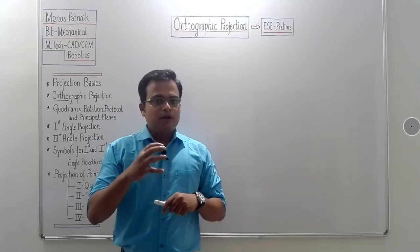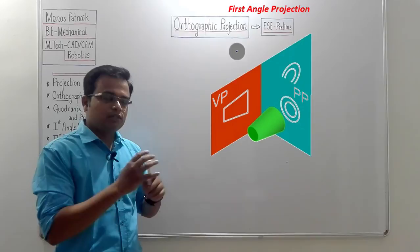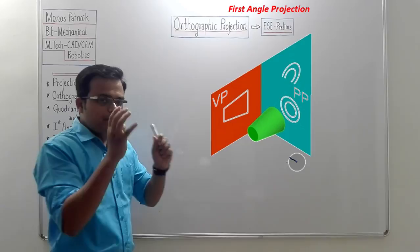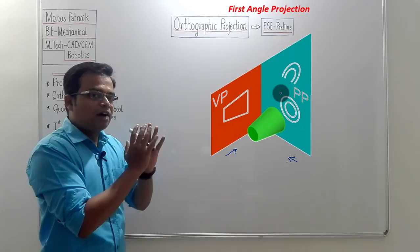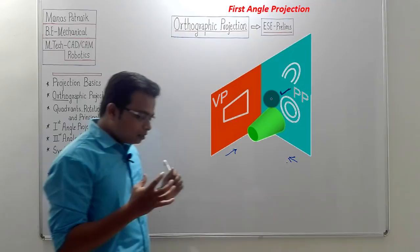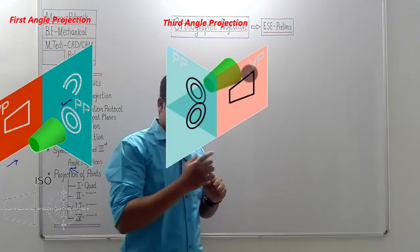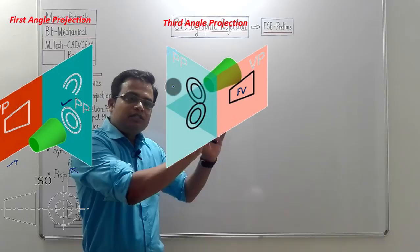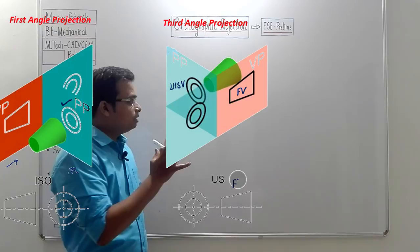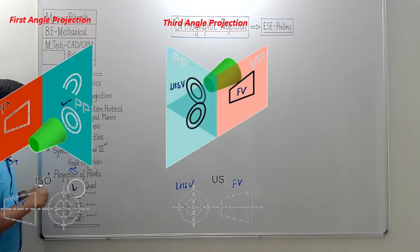Let's talk about symbols. To understand how the symbols are framed, we use the frustum of a cone. When you look at the frustum from the front, you get a trapezium. In first angle projection, the left-hand side view is to the right — giving two concentric circles. If the frustum is in the third quadrant, the trapezium is still the front view, but the left-hand side view is to the left, also showing two concentric circles. This is how these symbols are formed.